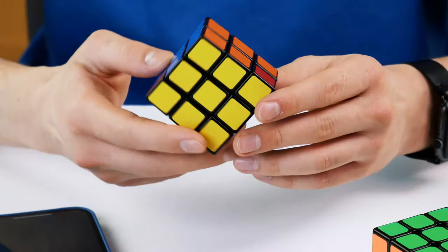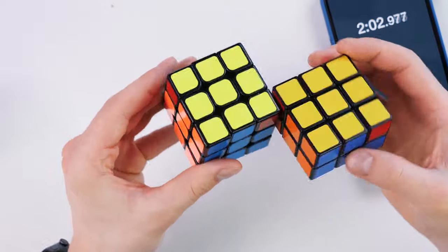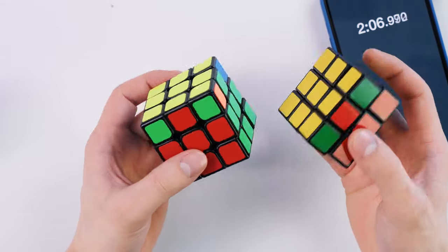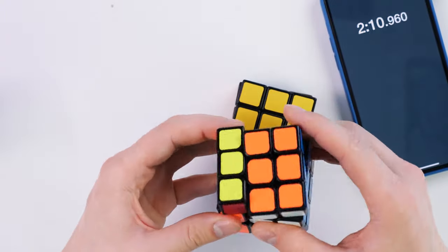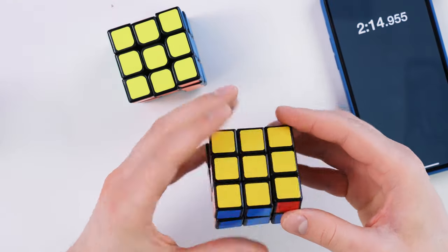Look, this is exactly the same algorithm as in a normal cube. Look, this is exactly the same situation as in a normal cube. But what do I do next? It's exactly the same, but here we have single movements.